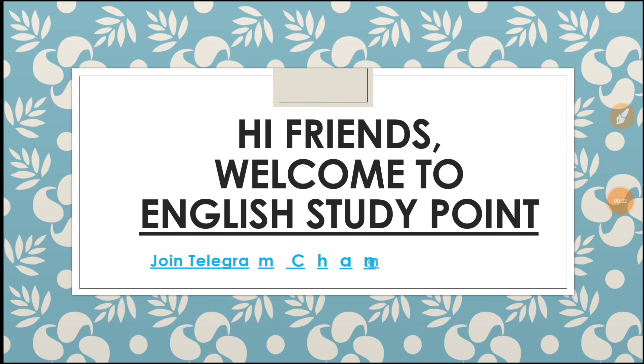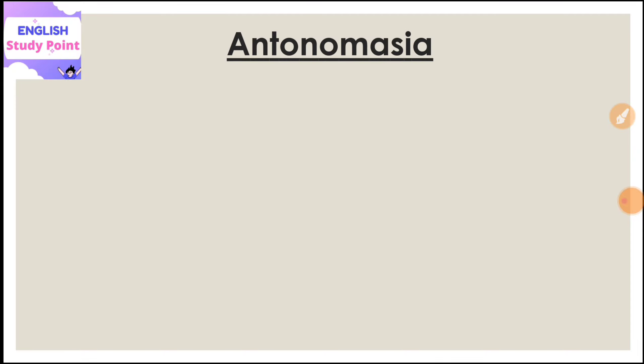Hey friends, welcome to English Study Point. Today in this video lecture I am going to discuss a figure of speech called antonomasia. Antonomasia is a kind of figure of speech in which a writer tries to address any person by not referring to them with their real name. Instead, the writer attributes that particular person with some quality that suits their personality. This is called antonomasia.